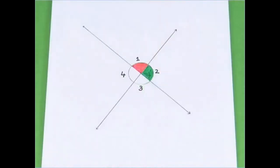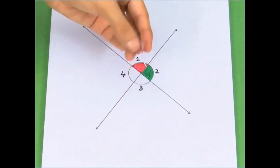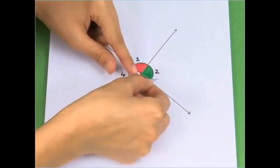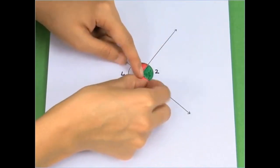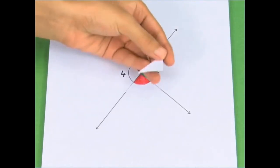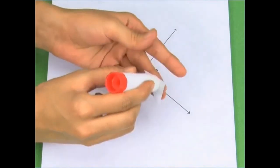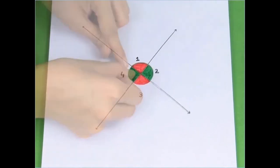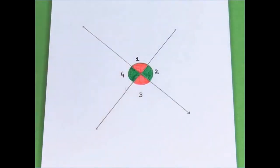Use the glue stick to paste the cut out of red angle on angle 3 on the first sheet so that the vertex of both angles coincides. The two angles exactly cover each other. So, angles 2 and 4 are equal.